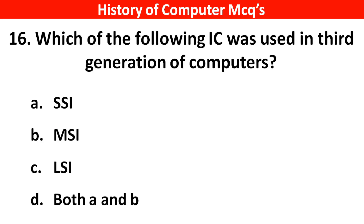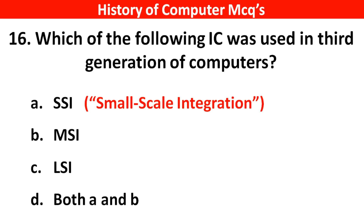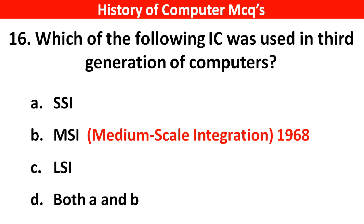Next question. Which of the following ICs were used in the third generation of computers? Options A: SSI, B: MSI, C: LSI, D: Both A and B. Right answer is option D, Both A and B. SSI stands for Small Scale Integration, MSI stands for Medium Scale Integration (1968), and LSI stands for Large Scale Integration (1970).